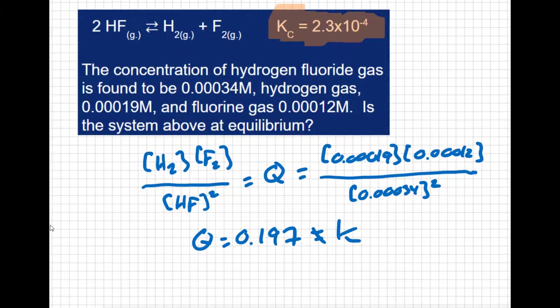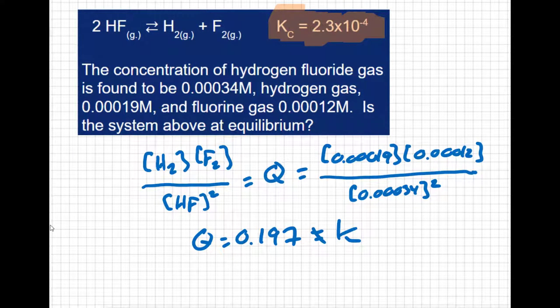So the second part of this question is, if we're not at equilibrium, which way will the reaction shift in order to attain equilibrium? Well, what we found here is that our Q value is bigger than our K value. Well then, in order to reach equilibrium, Q has got to get smaller. How do you get Q smaller? You reduce the top of your fraction and you increase the bottom of your fraction. How do you decrease the top of your fraction and increase the bottom of your fraction? You shift your reaction back to the left. That consumes the hydrogen and fluorine and produces more hydrogen fluoride.